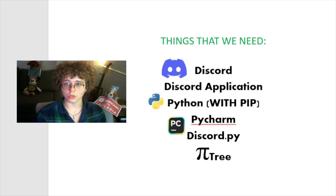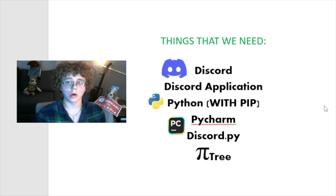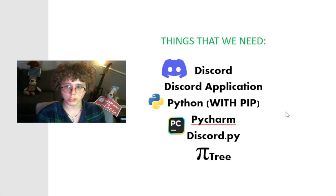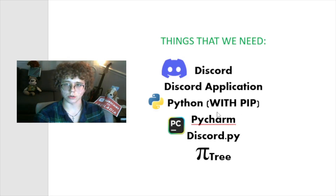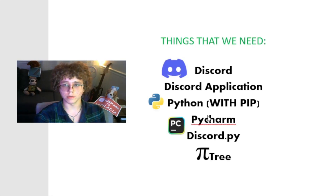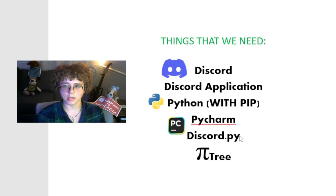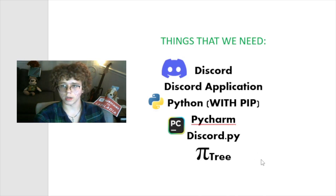We will need Discord. We will need a Discord application which will host our bot on the Discord platform. We will need Python, which is a programming language, and we will need it to have PIP — PIP is a package manager for Python packages. PyCharm is what we will program in. Discord.py is a package which PIP will be using, and Tree is also another package. Discord.py implements Discord APIs and Tree will let us implement and use slash commands for the Discord bot.